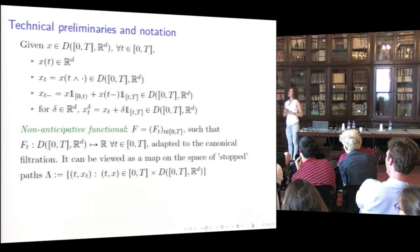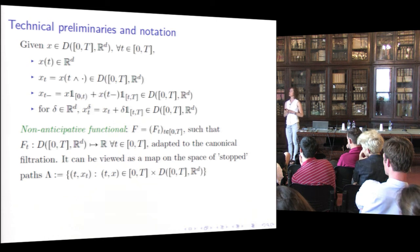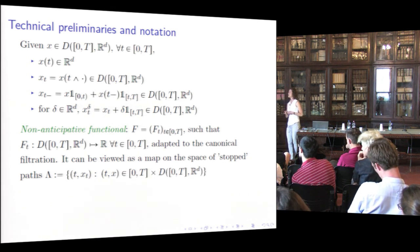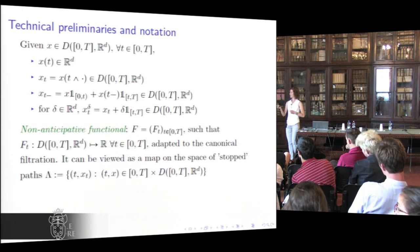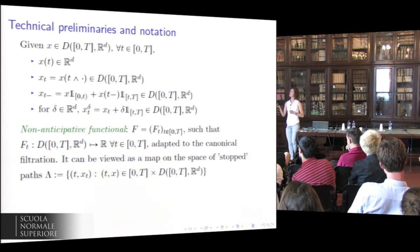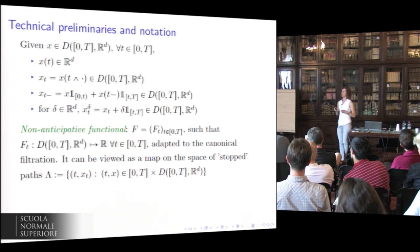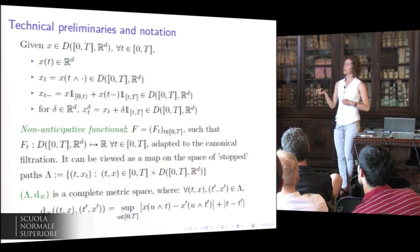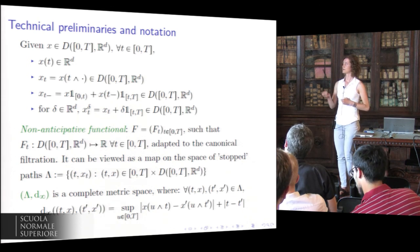We call a non-anticipative functional a family of functionals adapted to the canonical filtration — that is, the functional F_t is measurable with respect to the sigma algebra generated by the canonical process up to t. We can think of F as a map on the space of couples (t, x_t), the space of stopped paths, which is a complete metric space under the metric given by the sup-norm of the difference of two stopped paths plus the distance in time.